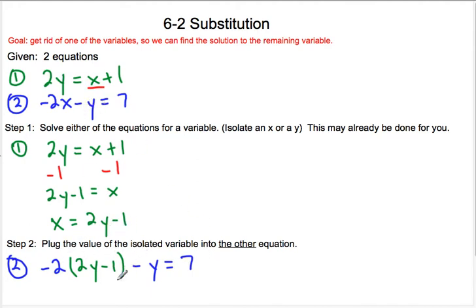Now you're going to want to use parentheses when you replace the value, because in this multiplication here, we want to make sure that the negative 2 is being multiplied to the whole thing and not just the 2y. So we've plugged in the value.